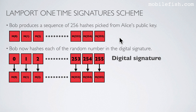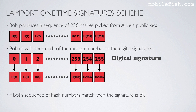Bob now hashes each of the random numbers in the digital signature he received from Alice. If both sequences of hash numbers match, then the signature is valid.